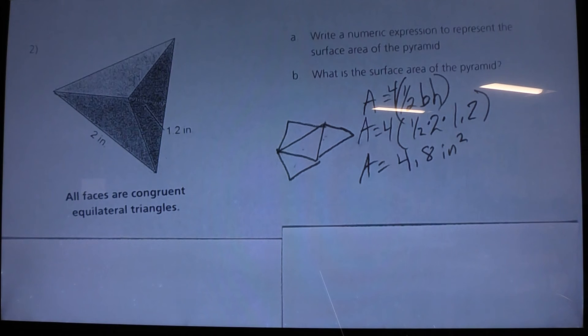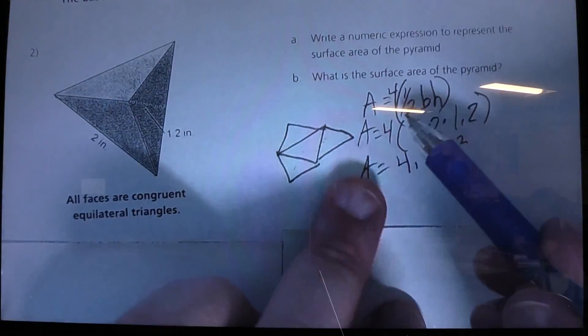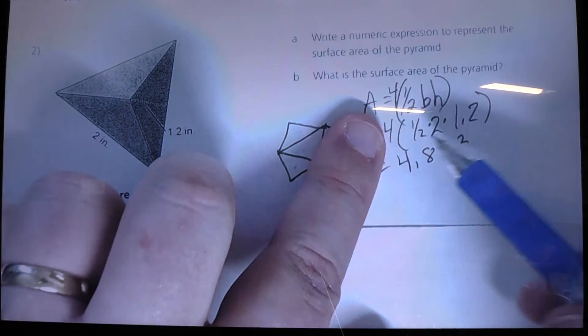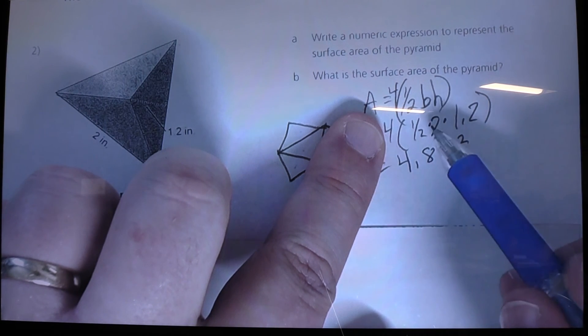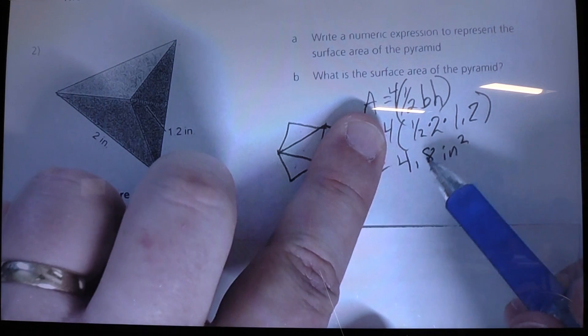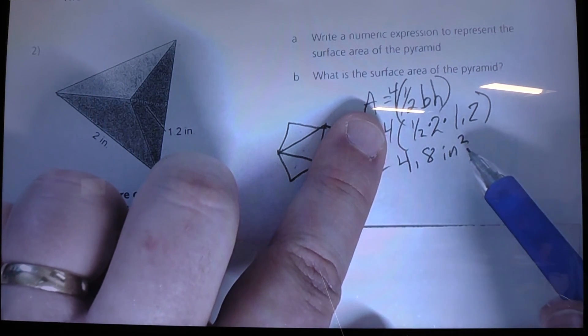Now, do I have any questions about any of the kids in here right now? All right? Okay. So, my numerical expression, well, if I didn't have this A equals, if I was to cover that up, I could say my numerical expression is 4 times half times 2 times 1 and 2 tenths.